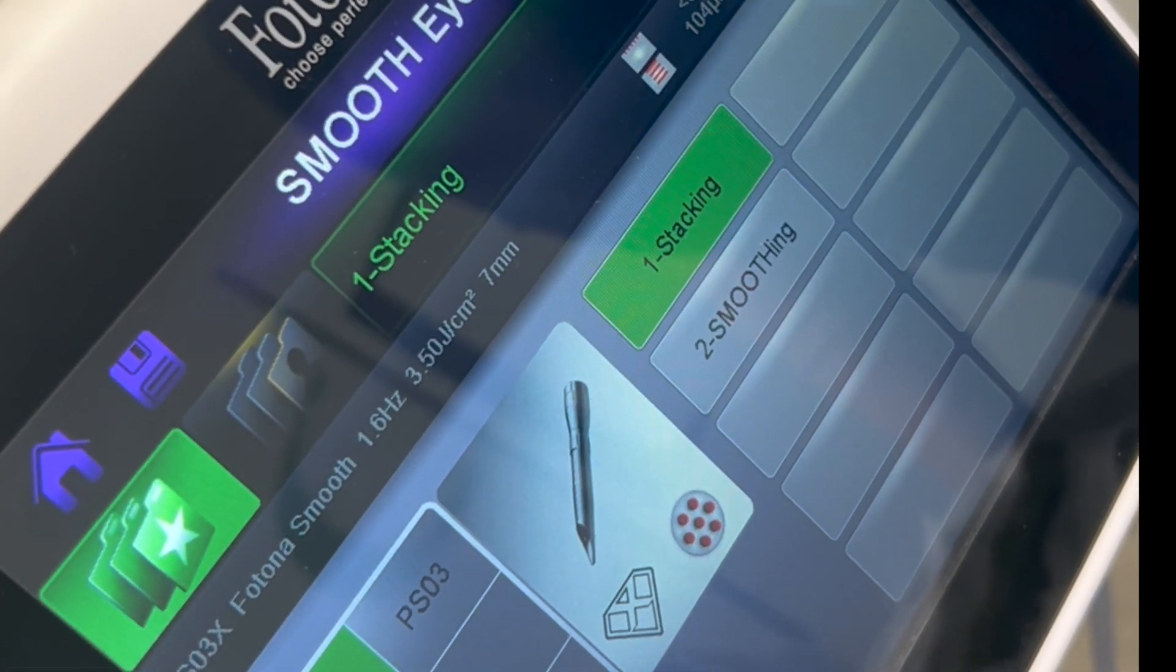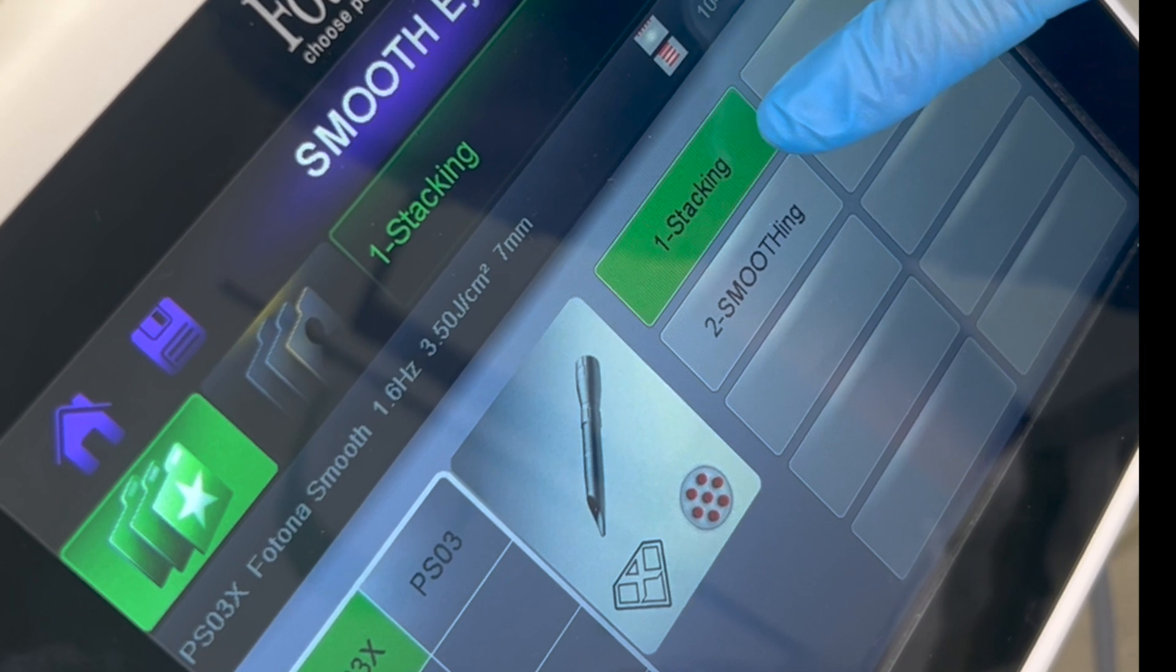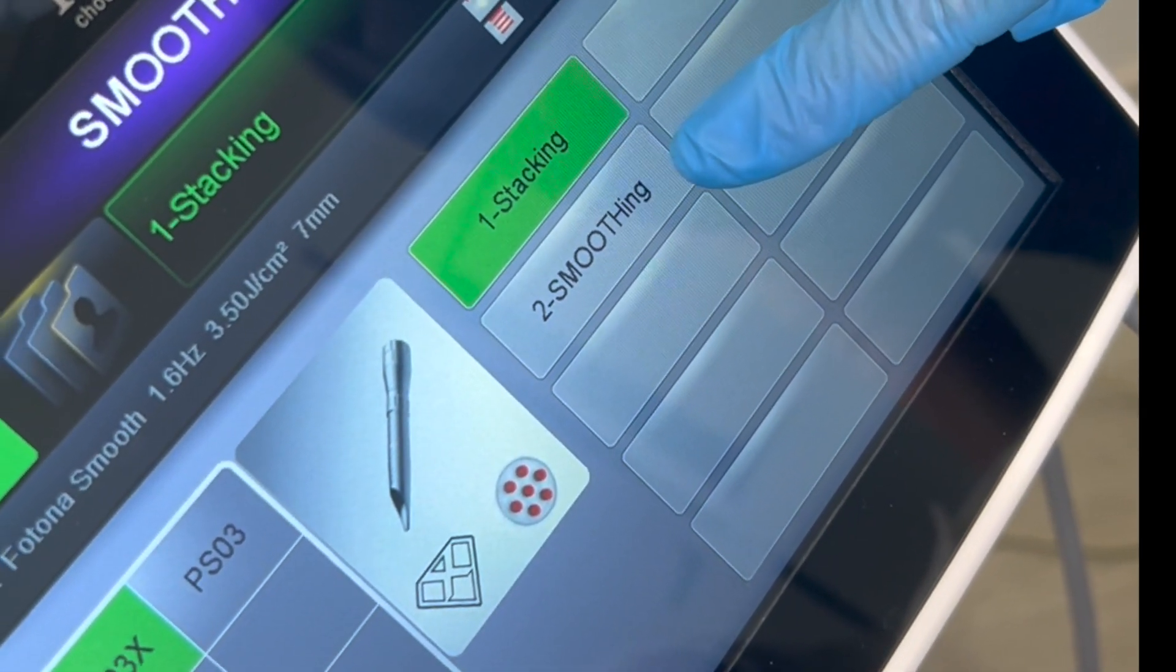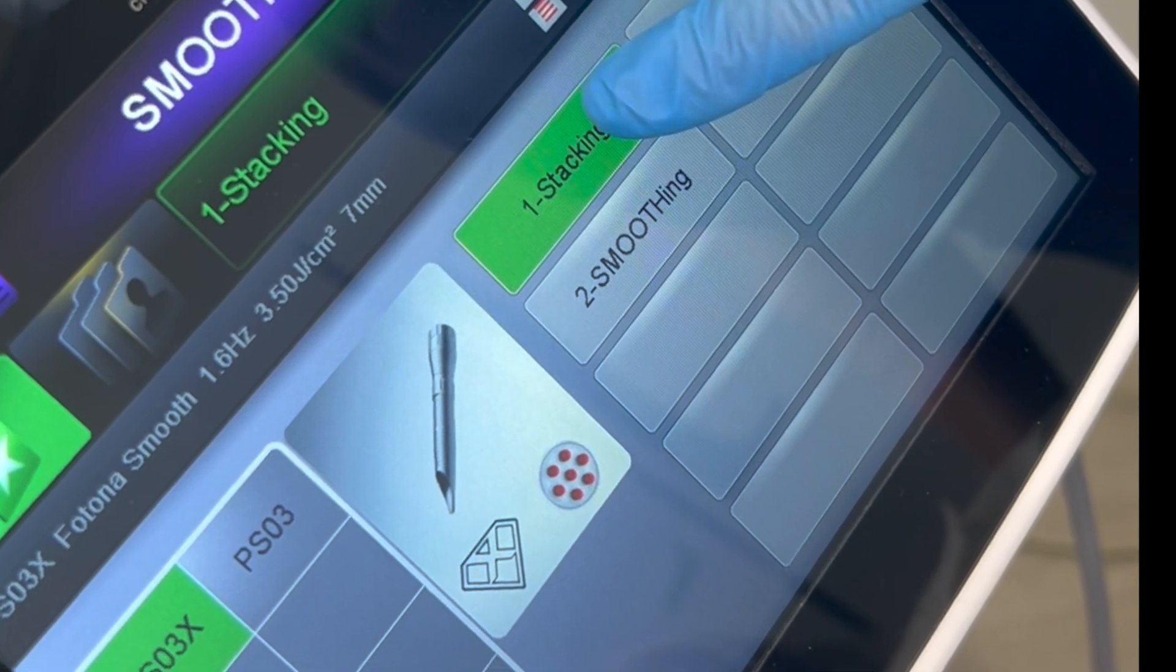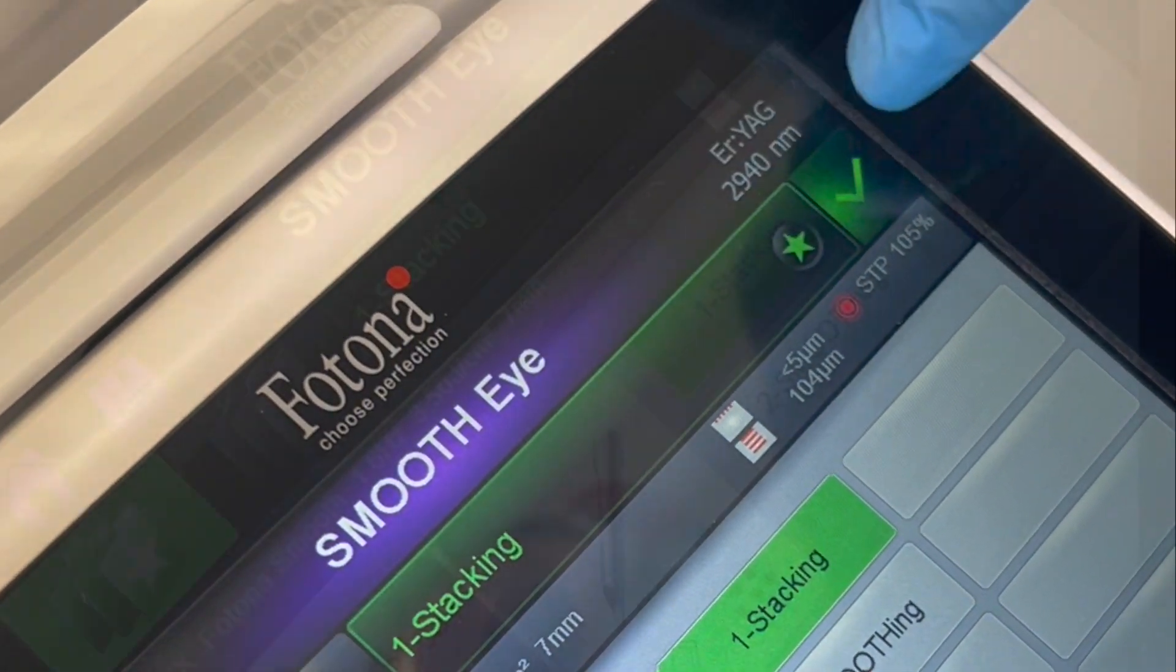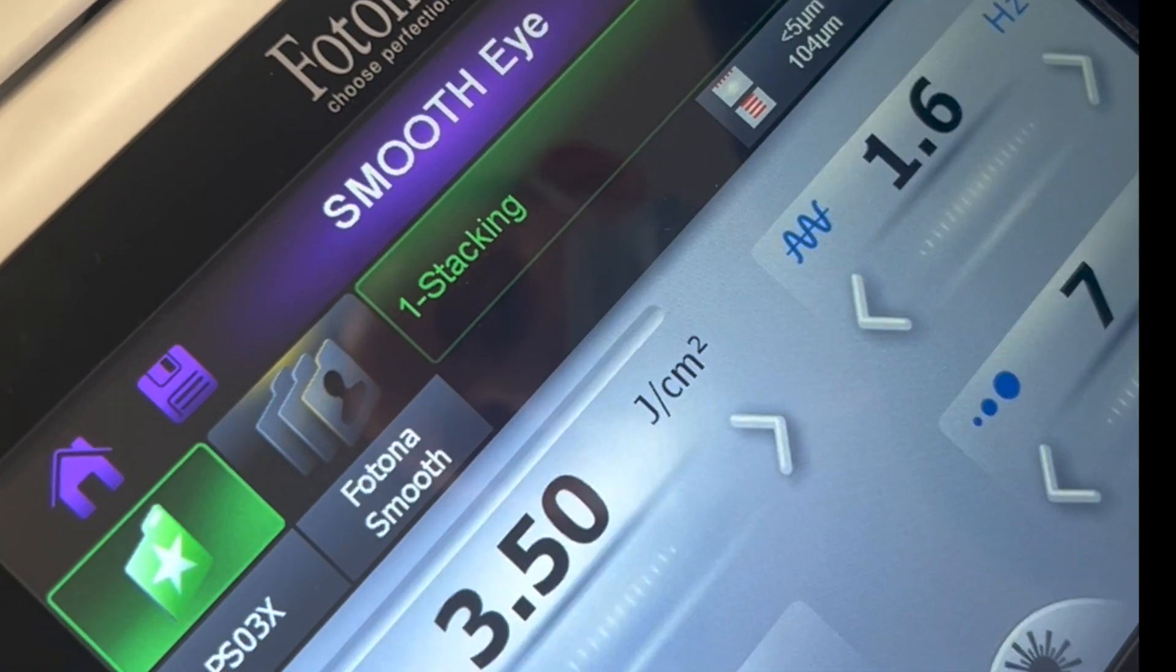This will then open up the next settings page where you can select the correct handpiece and the method that you're using. We will be selecting stacking, and when you're happy with your selection, tick and go on to the following page.